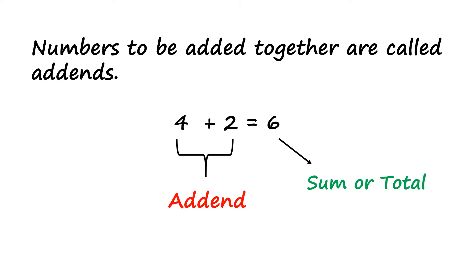Numbers to be added together are called add-ins. Here 4 plus 2 is add-in. When you add 4 plus 2 you get number 6. So this 6 is the sum or the total.